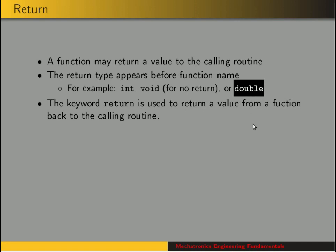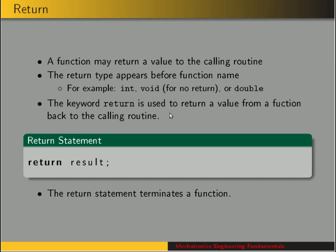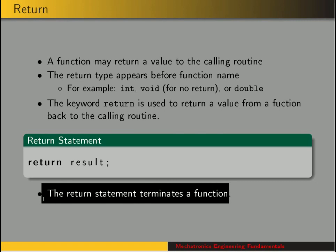Or a function could return a double. Whenever you see 'return' in a function, that is the end of the function and it returns execution back to the calling routine. Return is one of the keywords in C. For example, if you had a variable called 'result' at the end of a function, you'd have the statement 'return result', and that value would be sent back to the calling routine. The return statement terminates a function.